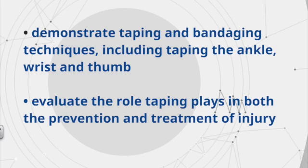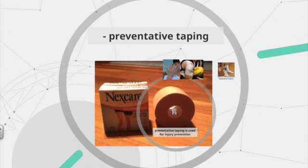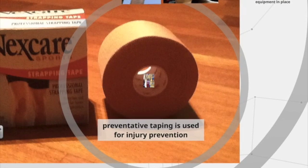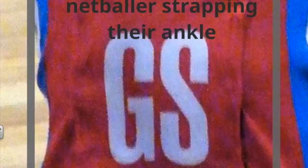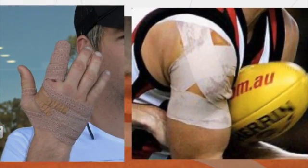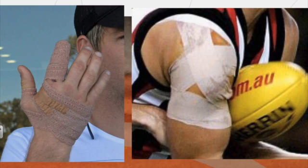The first dash point is preventative taping, sometimes referred to as strapping, which is used for injury prevention. For example, strapping the ankle to prevent an ankle sprain — a netballer would do this as it's a common injury in the game. Taping the ankle restricts the movement that can occur at the ankle joint. Other examples include cricket, where particularly the wicket keeper will have their fingers taped to prevent dislocation when catching.